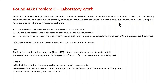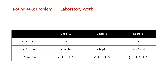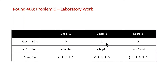Let's look at three different types of examples representing the three different cases for this problem. We have cases 1, 2, and 3 in this table, with the first row showing max minus min — the maximum value minus the minimum value. Our first example is 1 1 1, so max minus min is 0. Case 2 is 1 2 1, so max minus min is 1. Our third example is 1 1 3 3, so max minus min is 2.